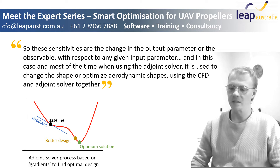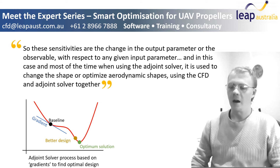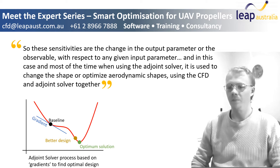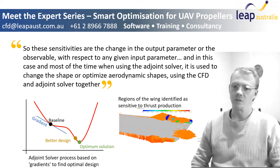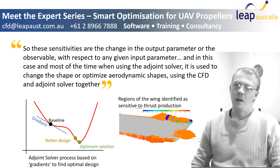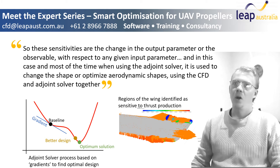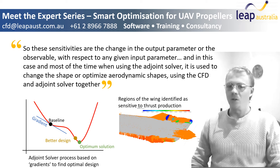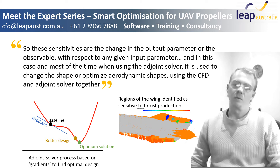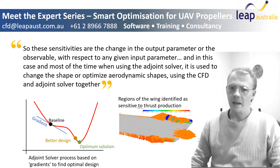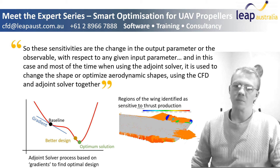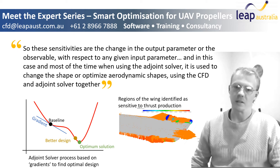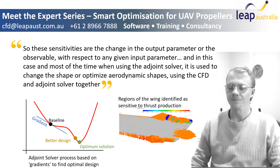These sensitivities are the change in the output parameter, or the observable, with respect to any given input parameter. In this case, and most of the time when using the adjoint solver, it is used to change the shape or optimize aerodynamic shapes using the CFD and adjoint solvers together.